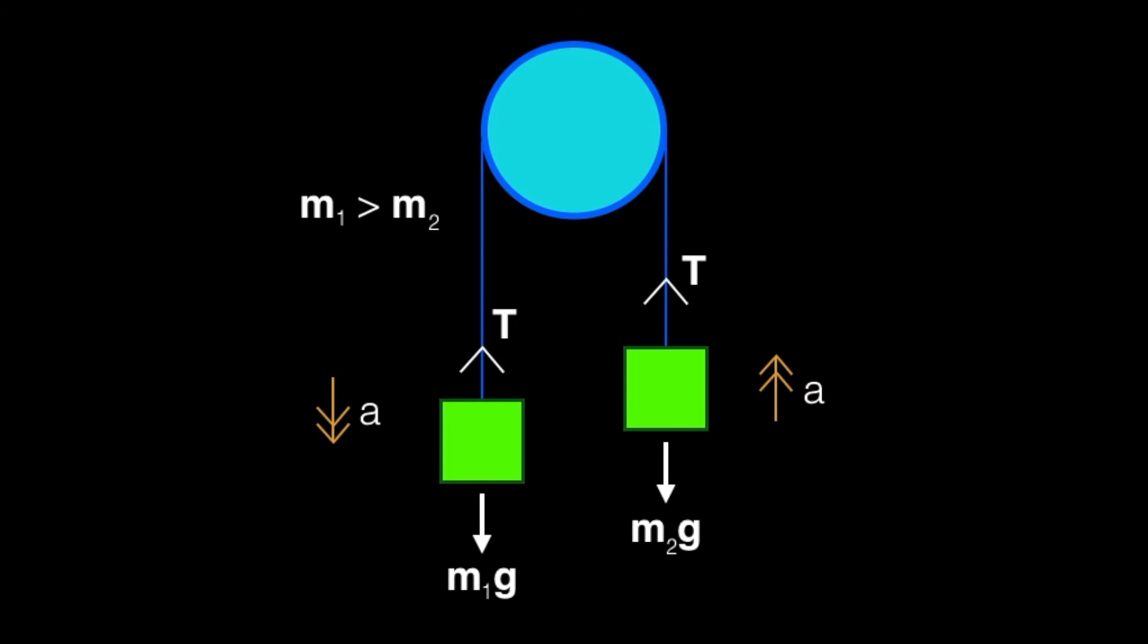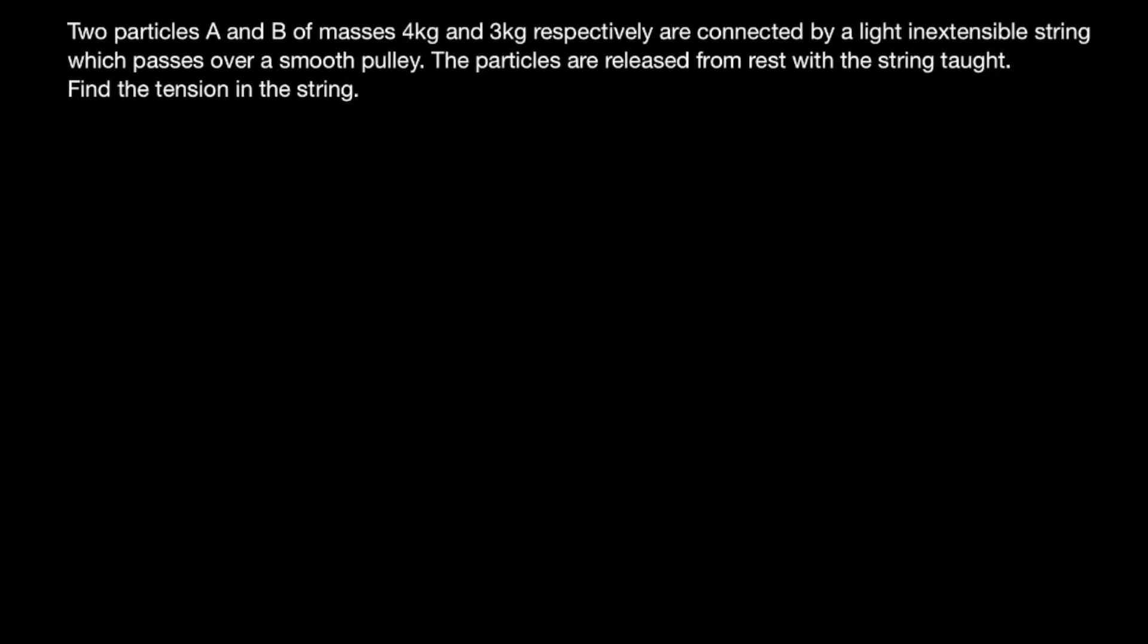You'll need to use it twice, one on each particle separately, and that will give you a set of simultaneous equations that you can then use to solve either for acceleration or tension or mass.